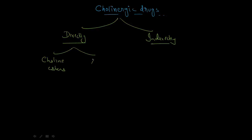Now let's talk about cholinergic drugs. Cholinergic drugs are broadly classified into directly acting and indirectly acting. Directly acting cholinergic drugs act directly on receptors, while indirectly acting drugs work on anticholinesterases. In directly acting cholinergic drugs, you have cholinesters and alkaloids. Alkaloids are obtained from plant products.